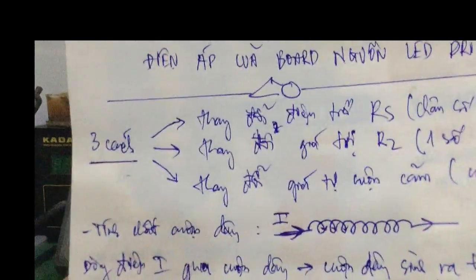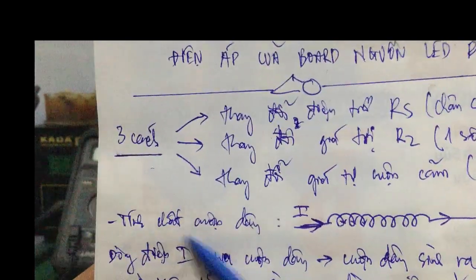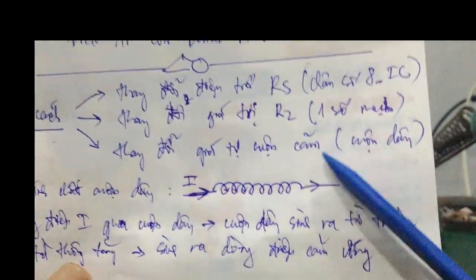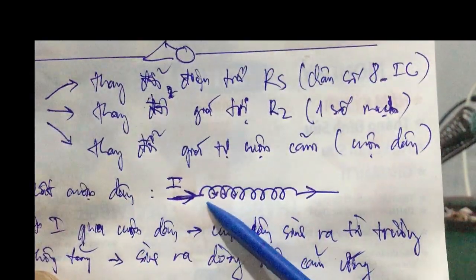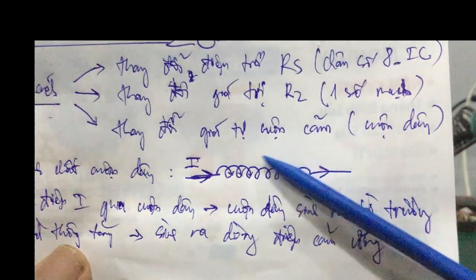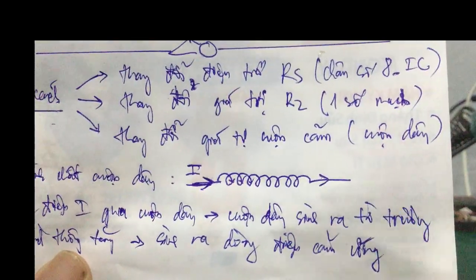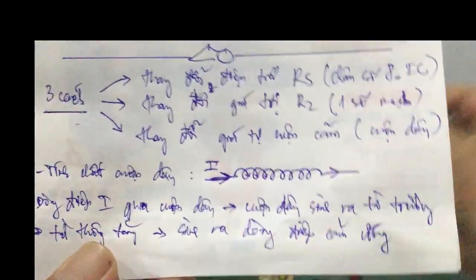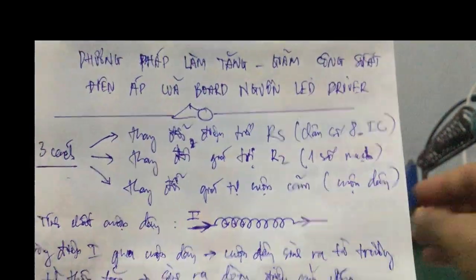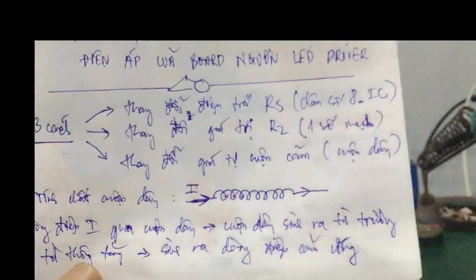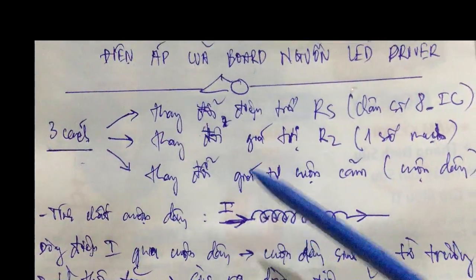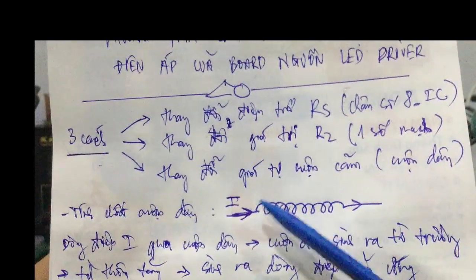Cuộn dây này sẽ có 2 loại: một là lõi không khí, hai là lõi ferrite. Nói chung là một loại có lõi và một loại không có lõi.